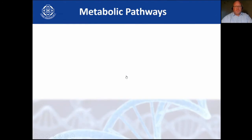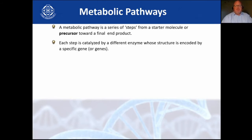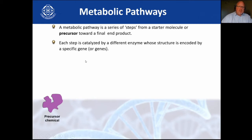A metabolic pathway is a series of steps that works towards a final product. Each step is catalyzed by a different enzyme whose structure is encoded by a specific gene. So if my gene is mutated, my enzyme won't work, which means my metabolic pathway won't work. If the plan is broken for my robot, my robot won't work, and because my robot can't work I cannot build a whole car — the pathway comes to a standstill.